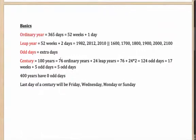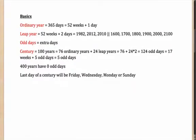First of all, the very basic terms which come in handy. What is an ordinary year? An ordinary year is your normal year which has 365 days. 365 days essentially means 52 weeks and one more day, because 52 weeks will be 364 days, so there is one extra day.